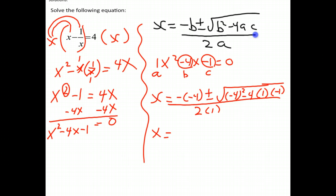Simplifying that, we get x equals negative, negative 4 is positive 4, plus or minus the square root of negative 4 squared is 16. Negative 4 times 1 times negative 1 is a positive 4, divided by 2 times 1.